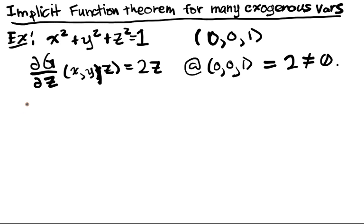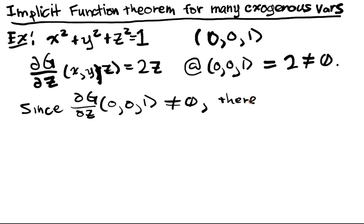So since dg/dz of 0, 0, 1 does not equal 0, there is z of x, y such that z of 0, 0 is equal to 1.